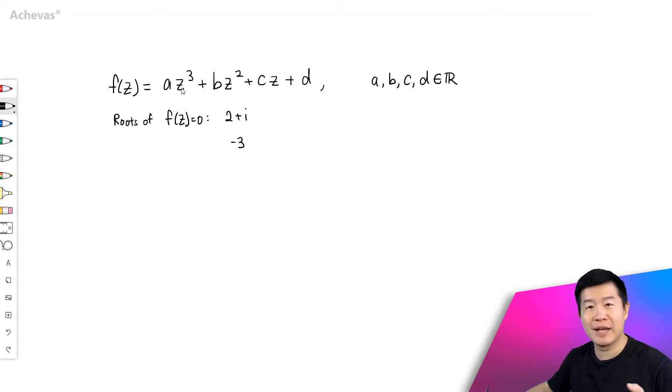We know the third root exists because we are looking at a cubic polynomial of z to the power of 3. So the third root will be 2 minus i.